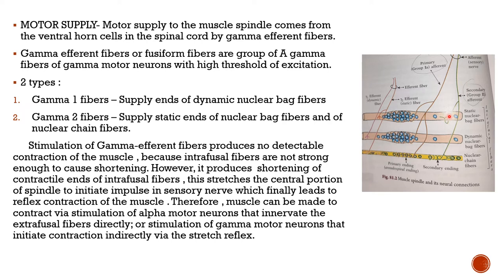The motor supply to the muscle spindle comes from the ventral horn of the spinal cord via gamma efferent fibers. Gamma efferent fibers — also called fusimotor fibers — are A-gamma fibers. Gamma-1 (dynamic) efferents supply the ends of the dynamic nuclear bag fibers, while gamma-2 (static) efferents supply the static ends of nuclear bag fibers and nuclear chain fibers. Stimulation of gamma efferent fibers produces no detectable contraction of the whole muscle, because intrafusial muscle fibers are not strong enough to cause shortening.